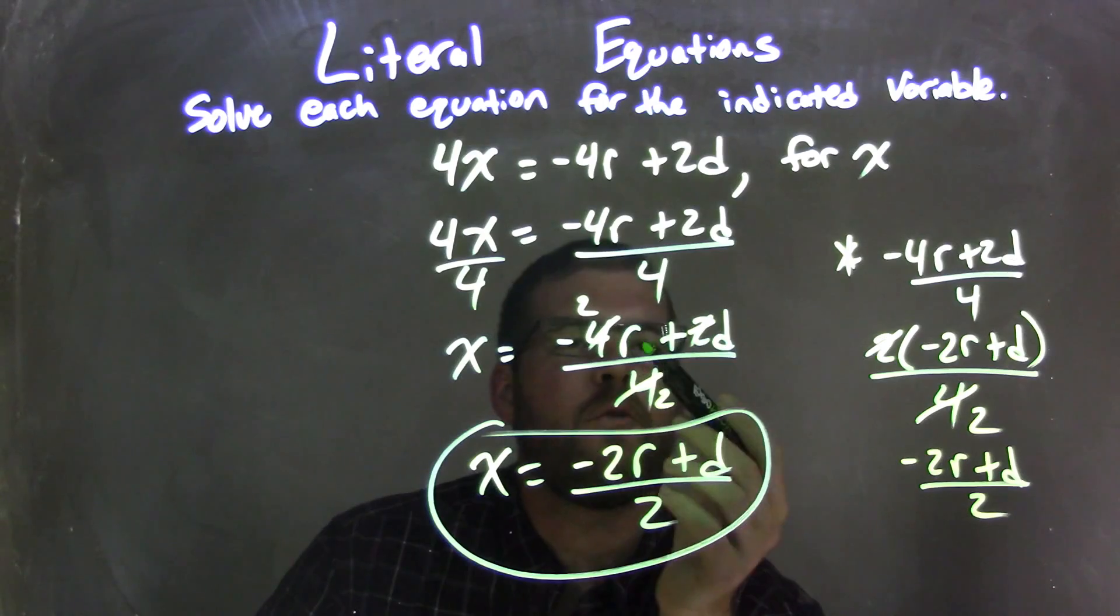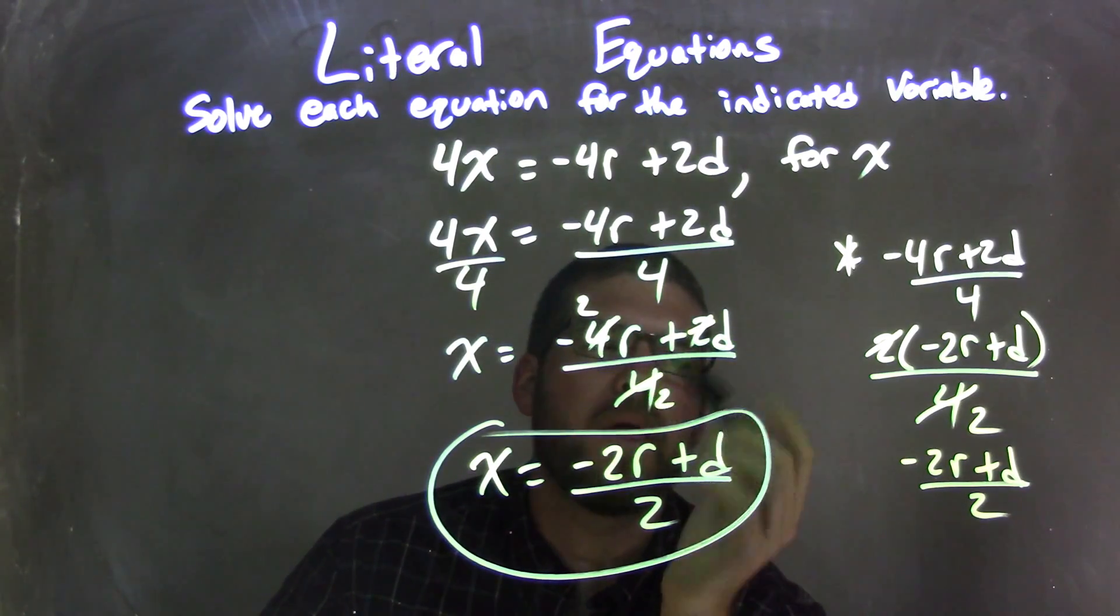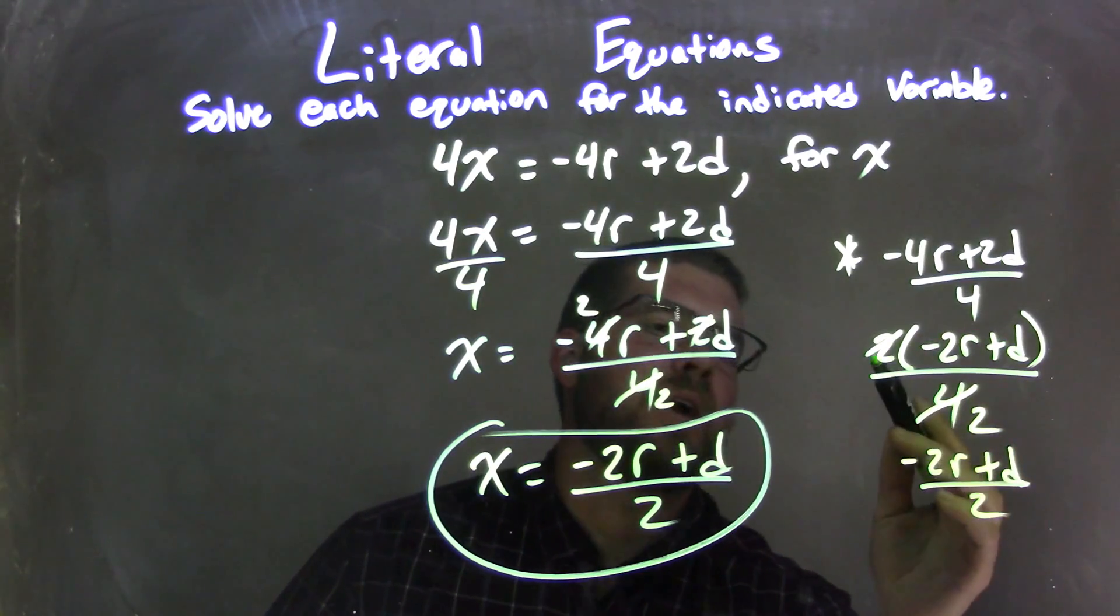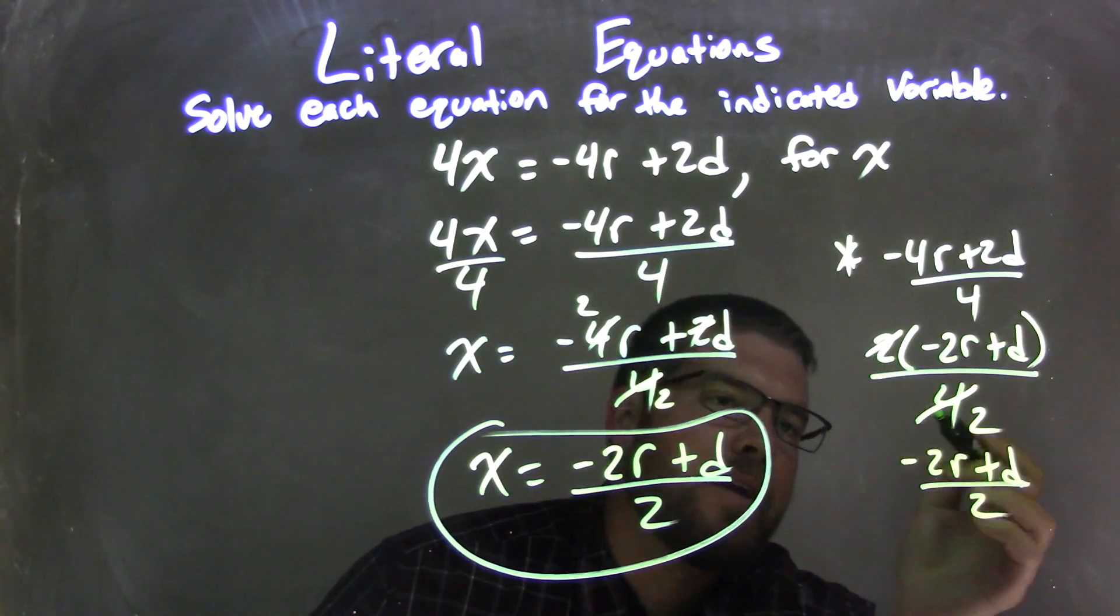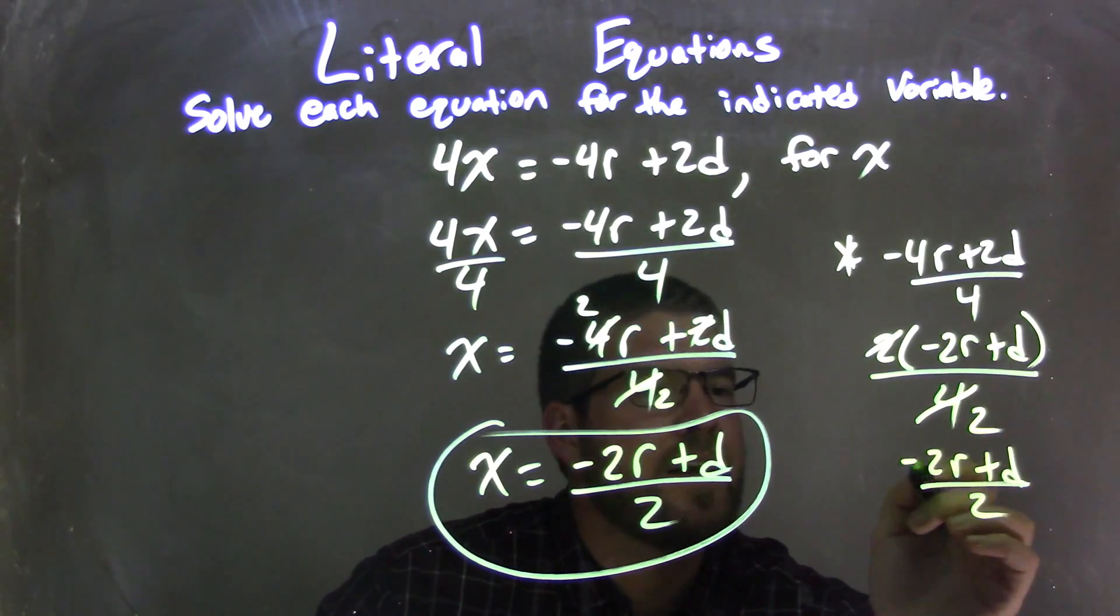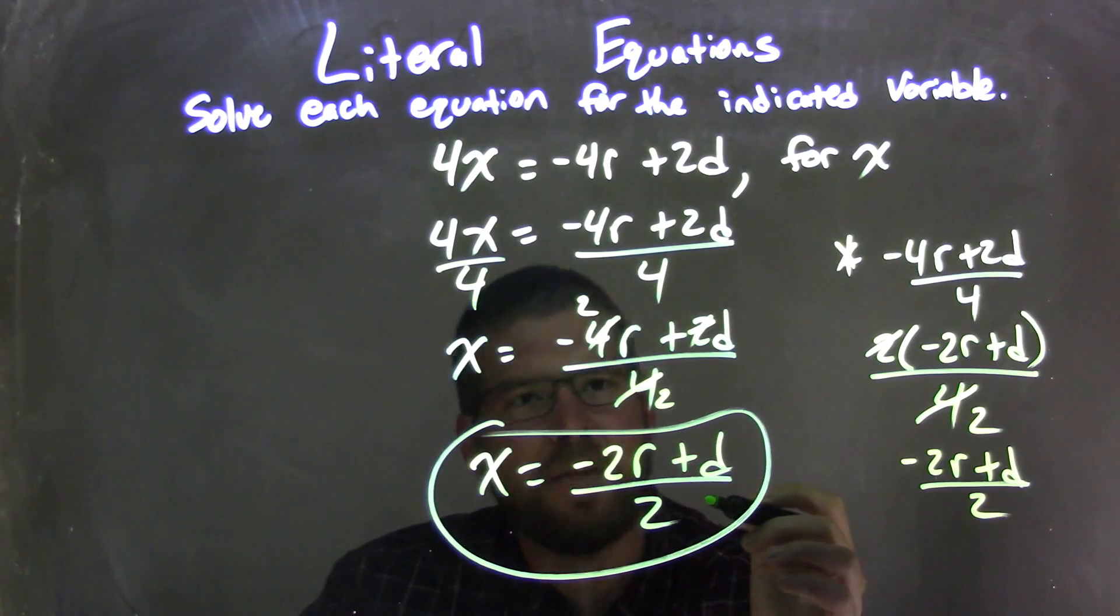I got x equals negative 4r plus 2d over 4. I can use this simplification by pulling a 2 out of the numerator, and then dividing the numerator and denominator, that 2 and the 4, canceling each other out to give me a 2 in the denominator, and leave me with what's on the inside of the parentheses, negative 2r plus d all over 2, and putting that back in.